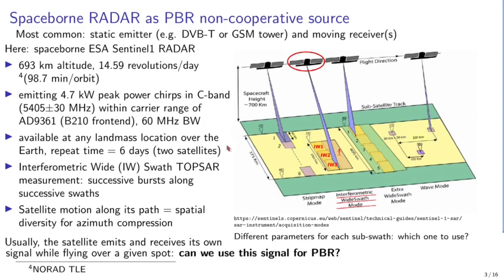The radar emits over all landmass in the interferometric wide swath mode, with three successive swaths swept during satellite motion and bursts one after another within each swath. If a target is located on the Earth's surface, we need to know which swath is illuminating it because radar parameters evolve along this illumination scheme.